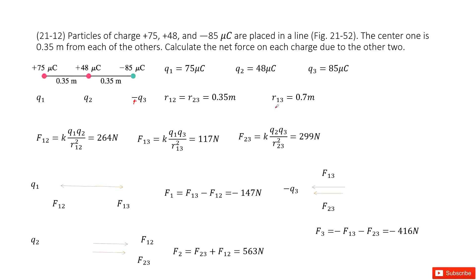Now first step, calculate the magnitude of the electric force for each other. So we look at Q1 and Q2 and calculate the magnitude of the electric force k times Q1 times Q2 over r12 squared, and it equals 264 newtons.